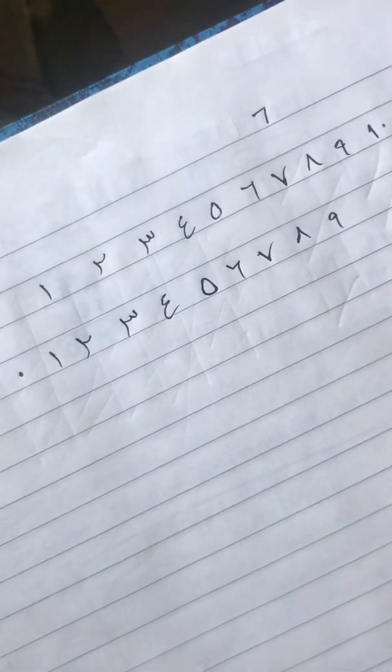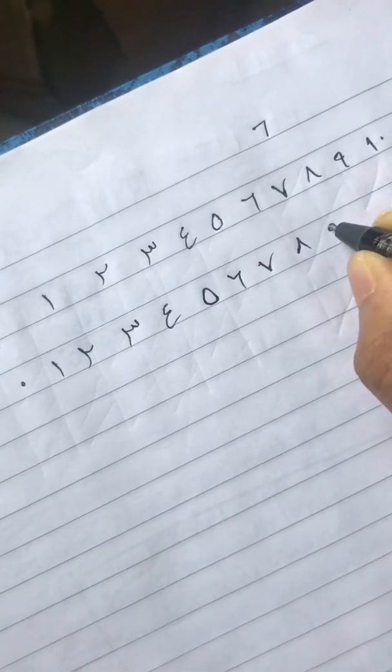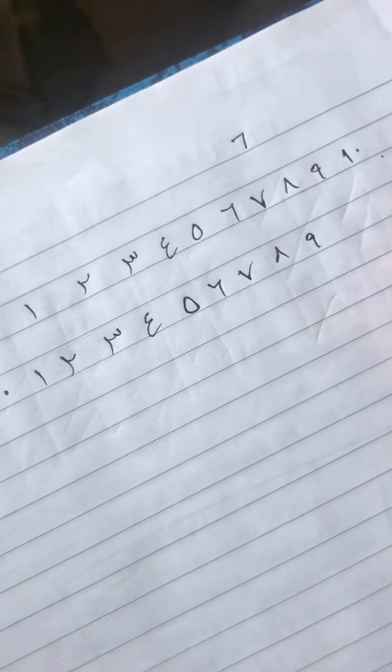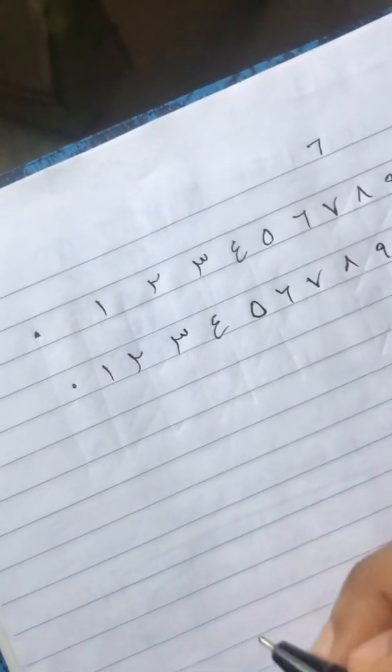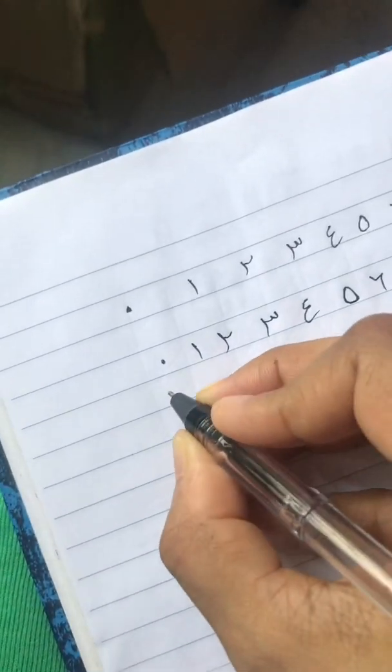And then ten, again one and zero. So this is zero, zero, one, two, three, four, five, six, seven...